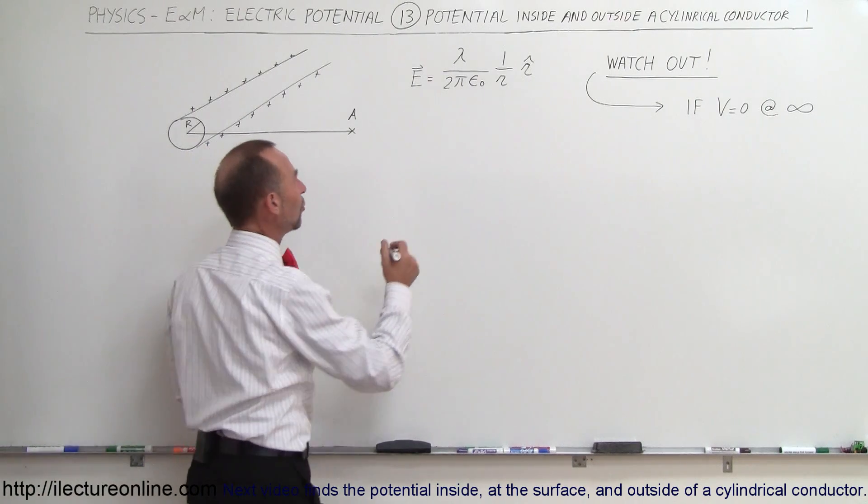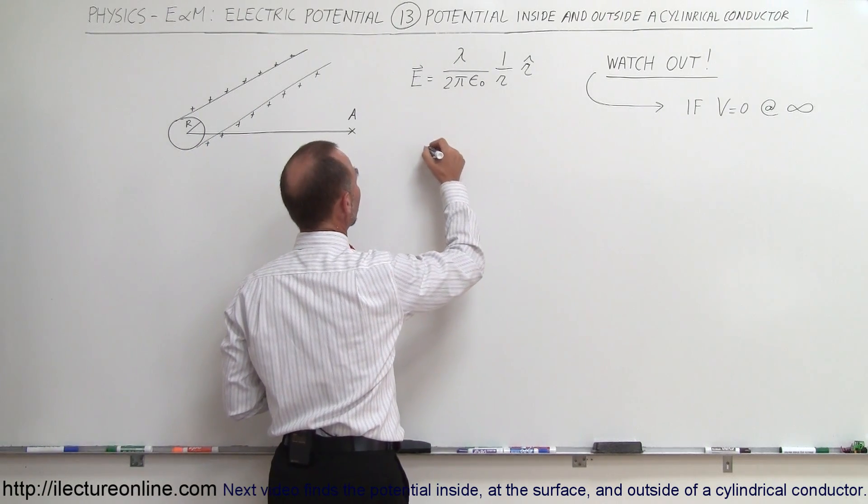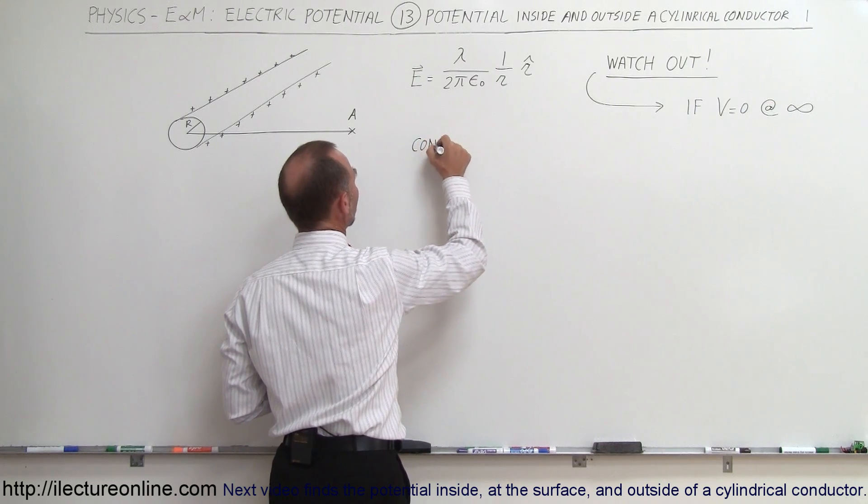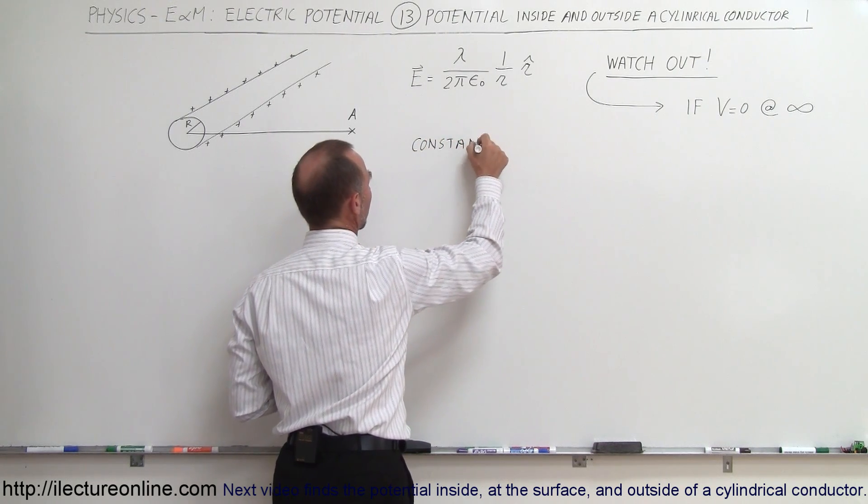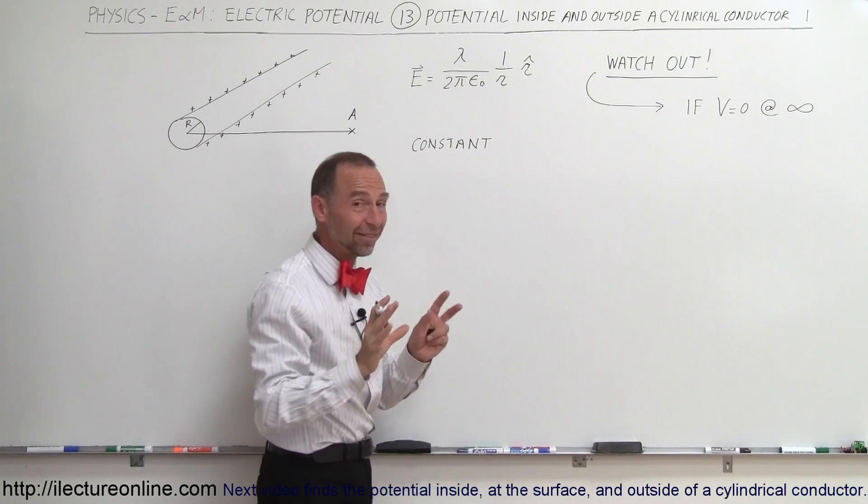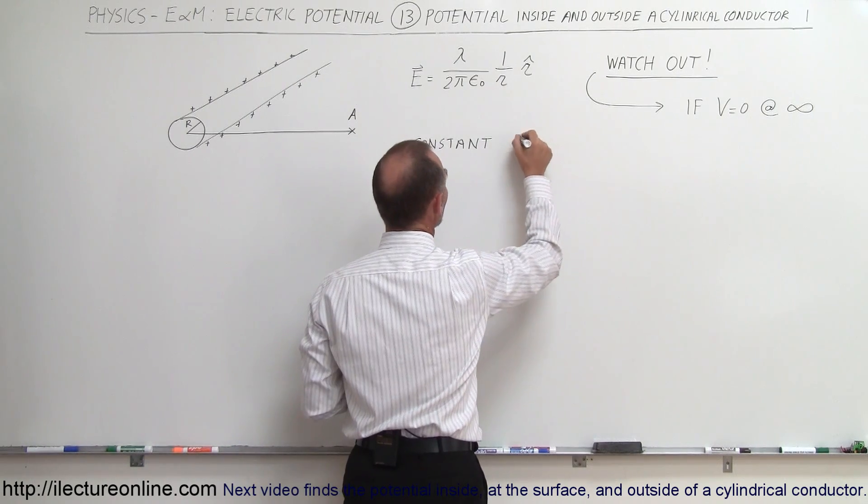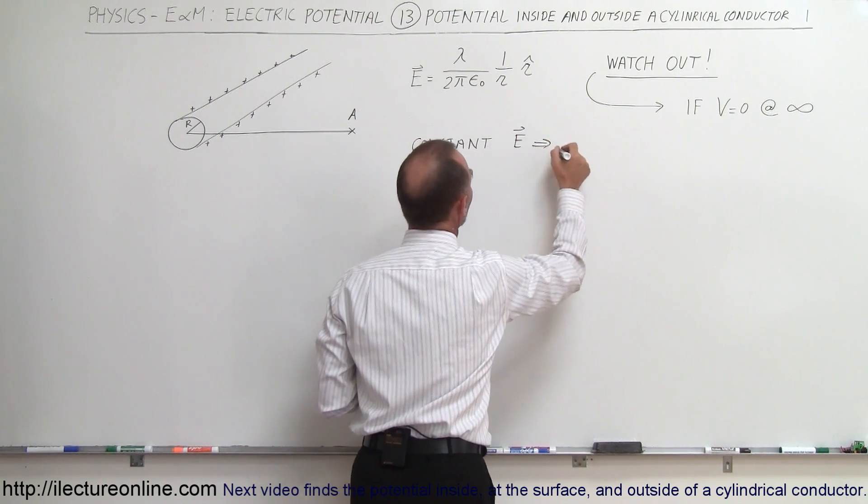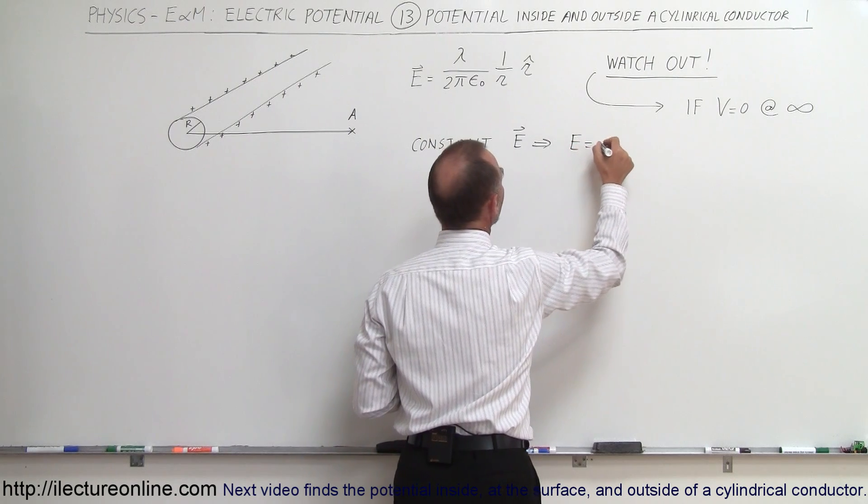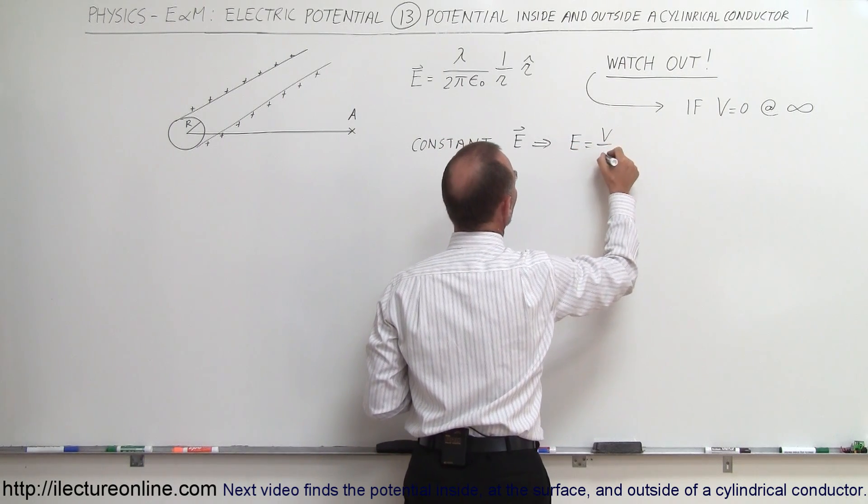So again, let's assume that if electric field is constant, so for a constant electric field, which of course in this case it's not, but just to develop the equation, for a constant electric field, we can say that E is related to V over D.